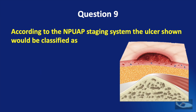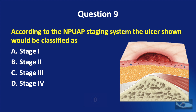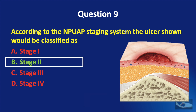Question number 9. According to the NPUAP staging system, the ulcer shown would be classified as: stage 1, stage 2, stage 3, or stage 4. The correct answer is stage 2.